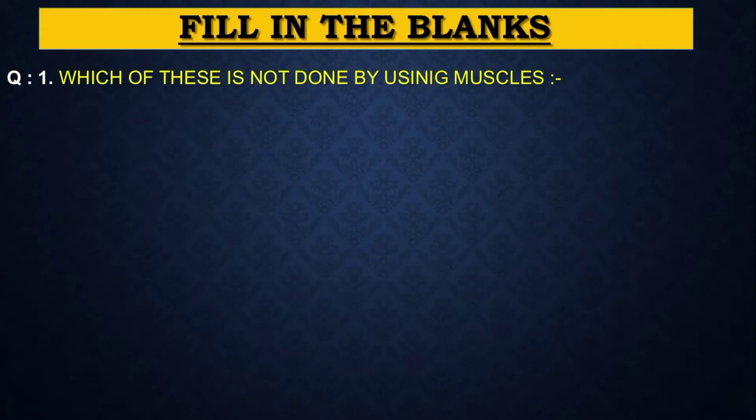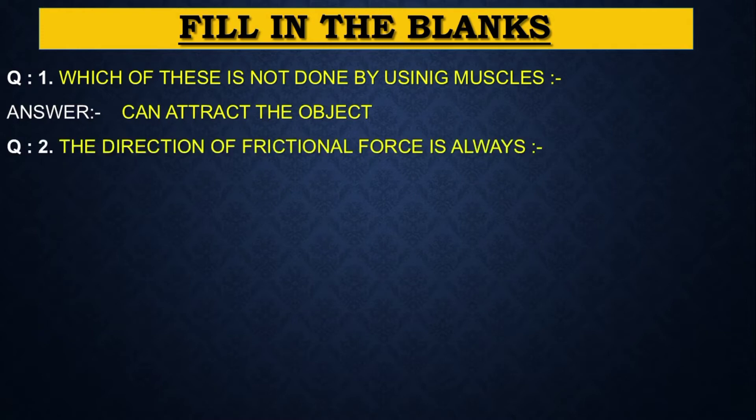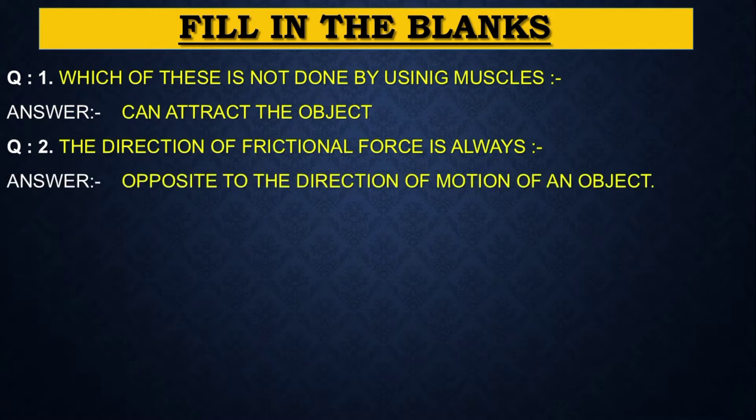Question number 1: Which of these is not done by using muscles? Answer is can attract the object. Next question. The direction of frictional force is always answer is opposite to the direction of motion of an object.